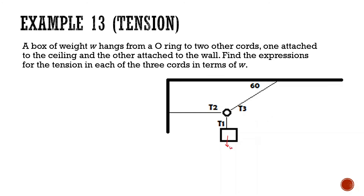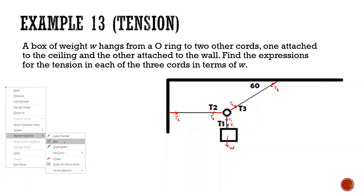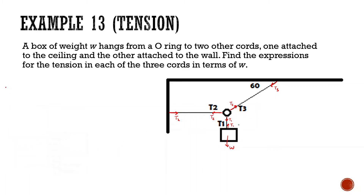The force of gravity on the box is weight W. T1 pulls upward; same string, tension going in different directions. T2 and T3 also have forces in opposite directions at the O-ring. Let's first look at T1, which is the easiest. Since the weight is not moving, T1 is canceling out with the weight, so T1 equals the weight W, or mass times gravity of the box.